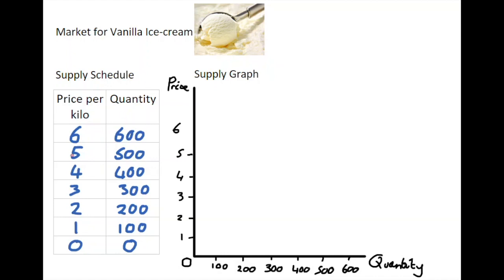Okay, so let's take this information off our supply schedule where we have price and quantity coordinates and translate them onto our supply graph. Up here for price we call this the y-axis, and down here where quantity is we call this the x-axis.